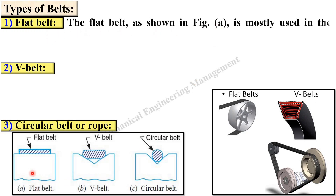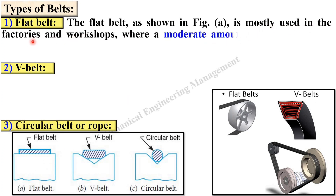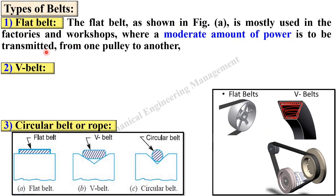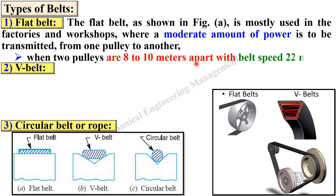The flat belt, as shown in figure A, is mostly used in factories and workshops where a moderate amount of power is to be transmitted. If you want to transmit moderate power from one pulley to another, you can use the flat belt when two pulleys are 8 to 10 meters apart with belt speed of 22 meters per second.